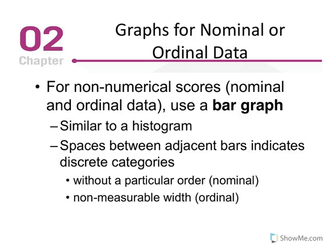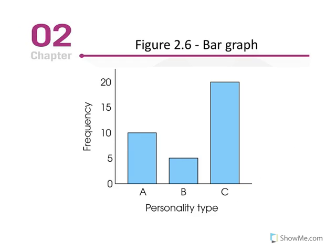Graphs for nominal and ordinal data. So for non-numeric scores, qualitative data, nominal and ordinal scales of measurement, we use a bar graph. So it looks a little similar to the histogram. But one very specific distinction is that it has spaces between the bars. So they don't run together where one ends, the other one doesn't continue. They're separated without a particular order, would refer to as nominal, non-measurable width, ordinal.